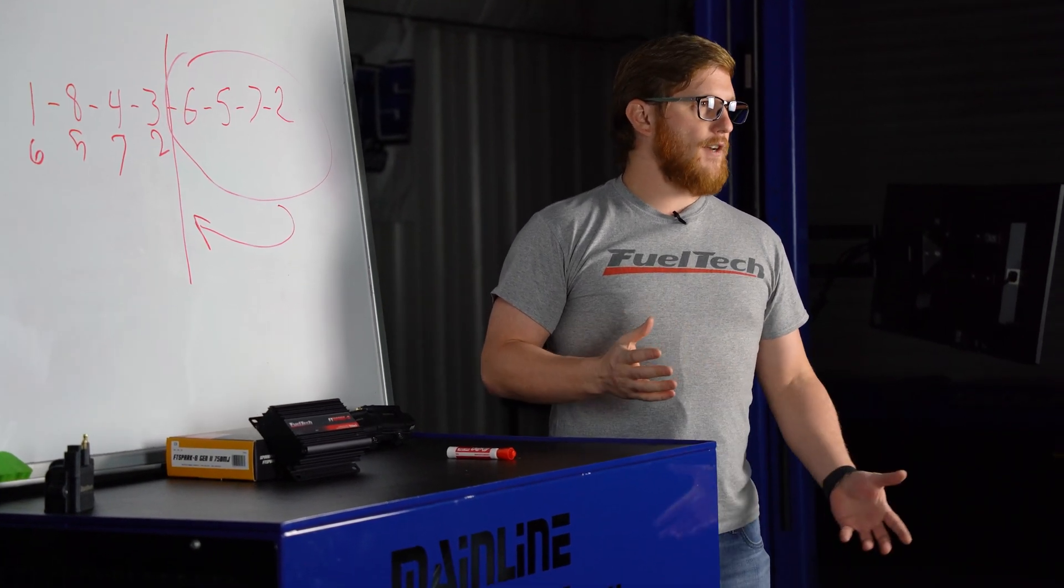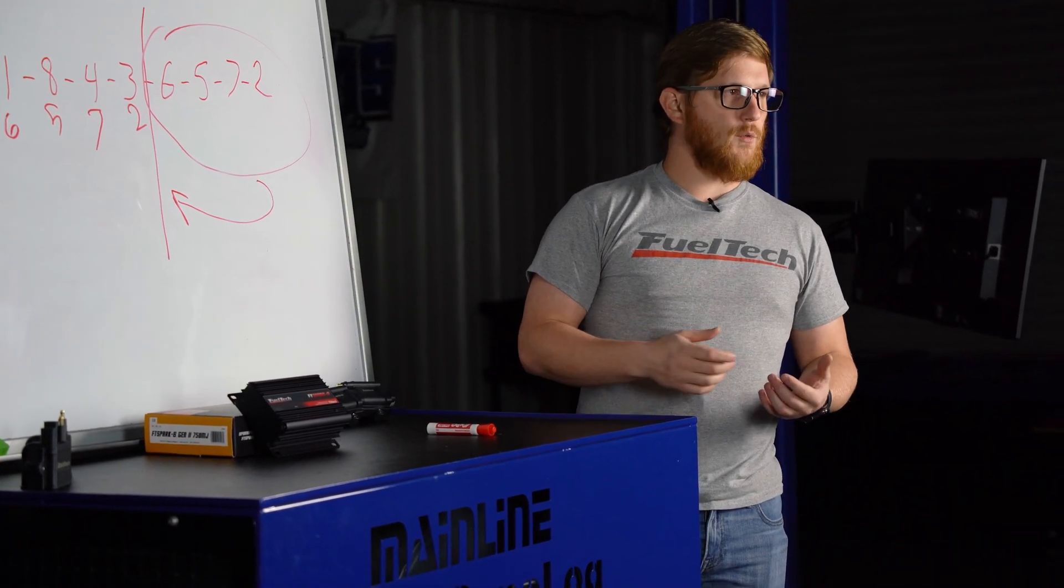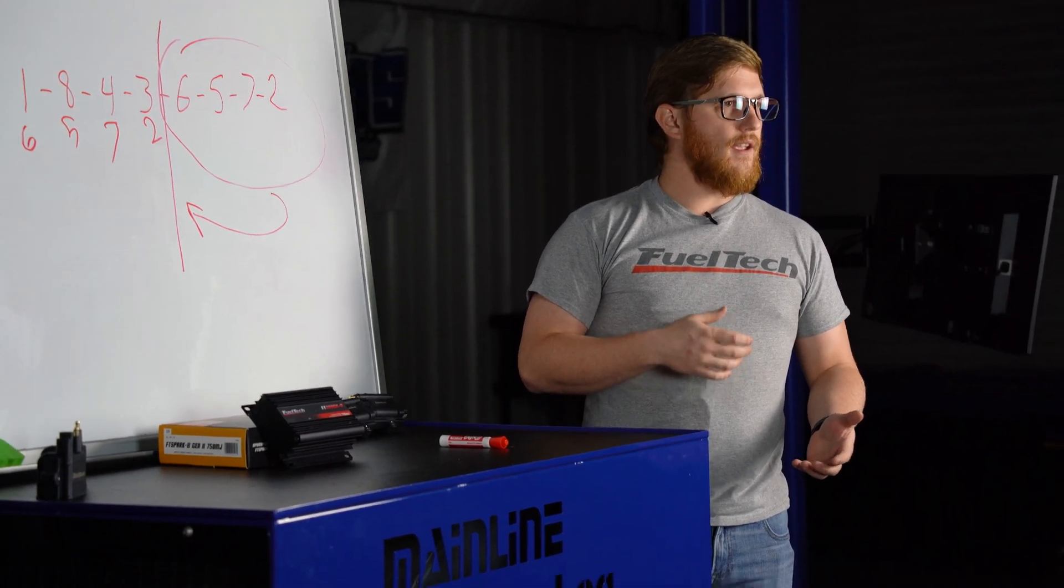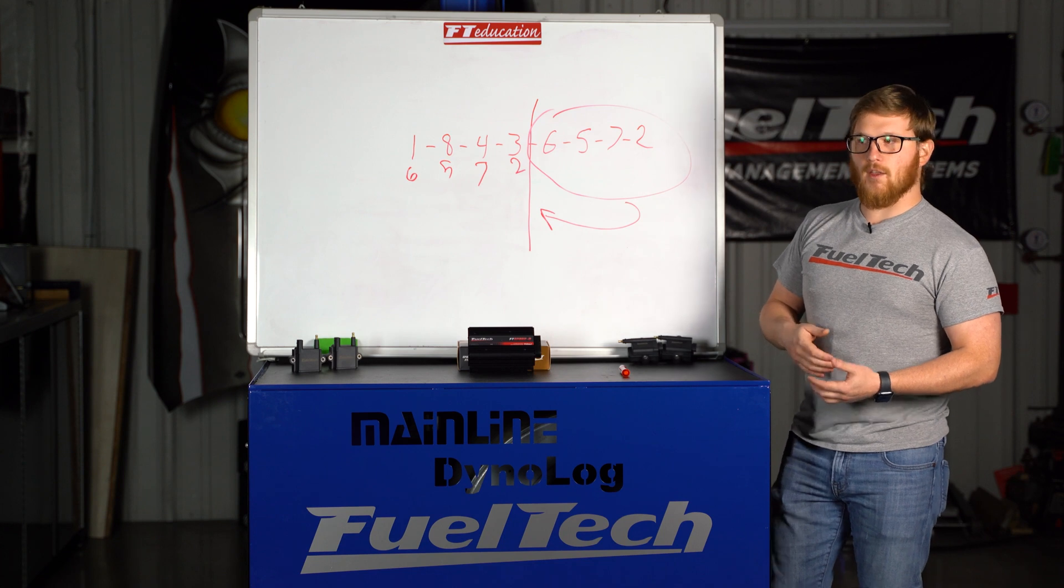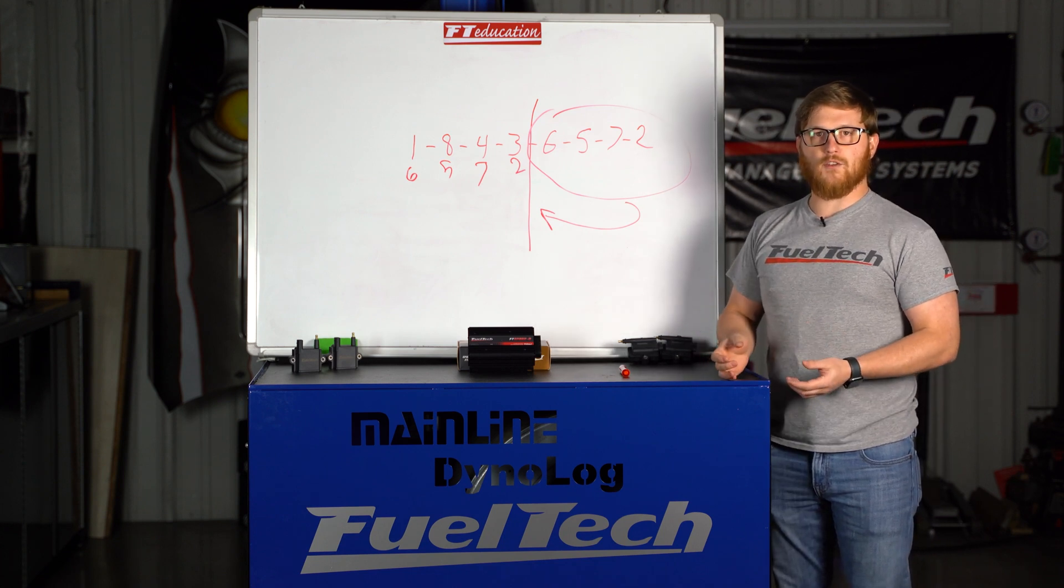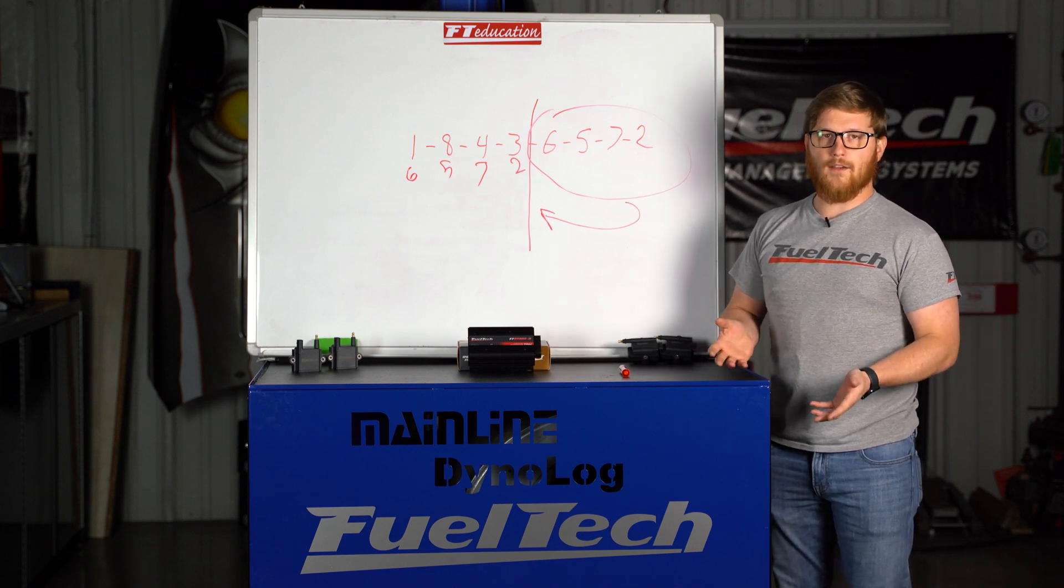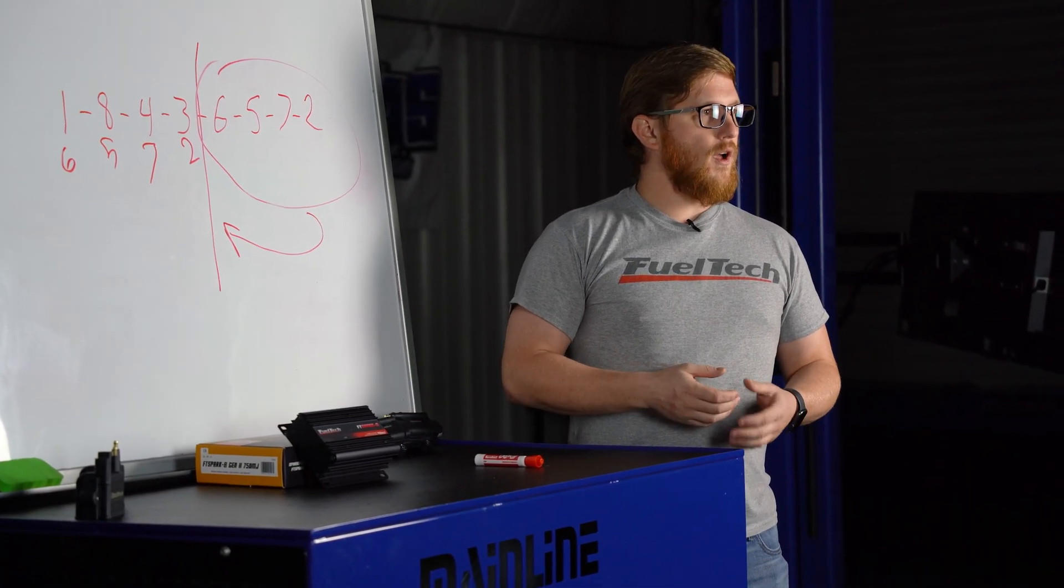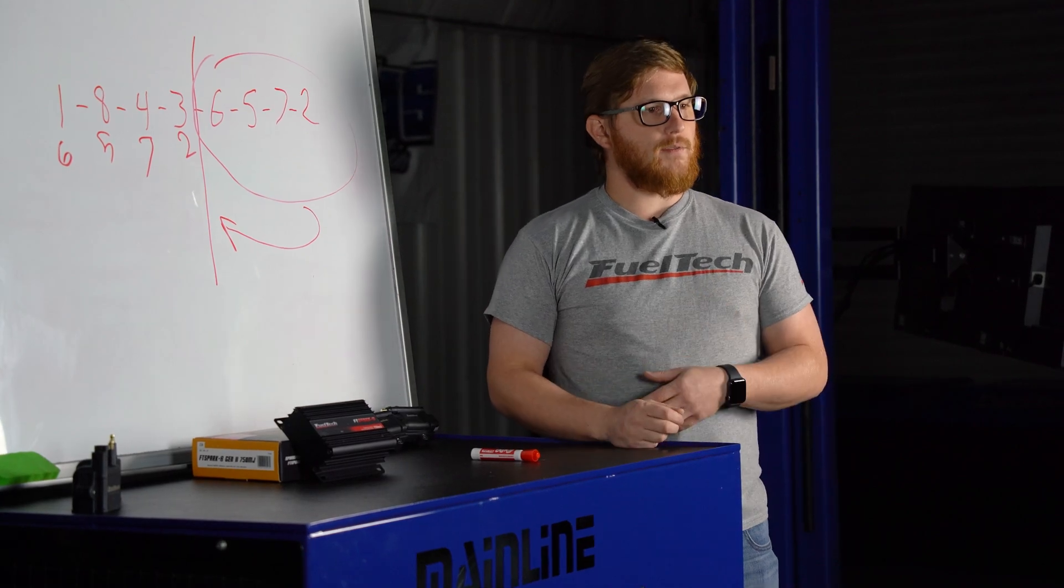Also, if you have a crank trigger that is missing tooth style like a 12 minus one, which is our favorite, a 60 minus two, which a lot of the later generation LS engines and some other vehicles have from the factory or even if you have an aftermarket one, those do not require a cam sync to be able to do coil-on-plug when you set them up as wasted spark.